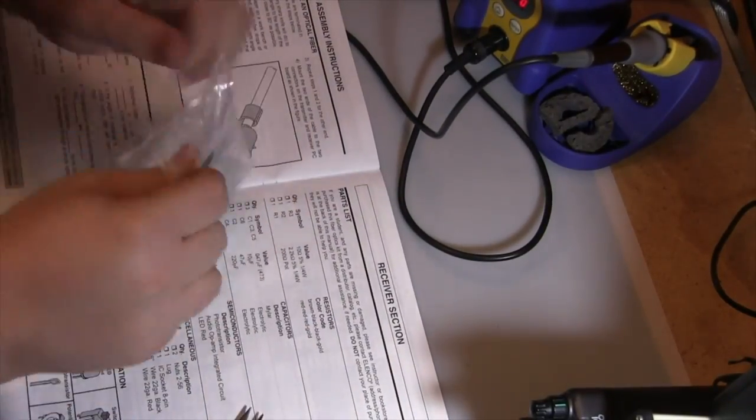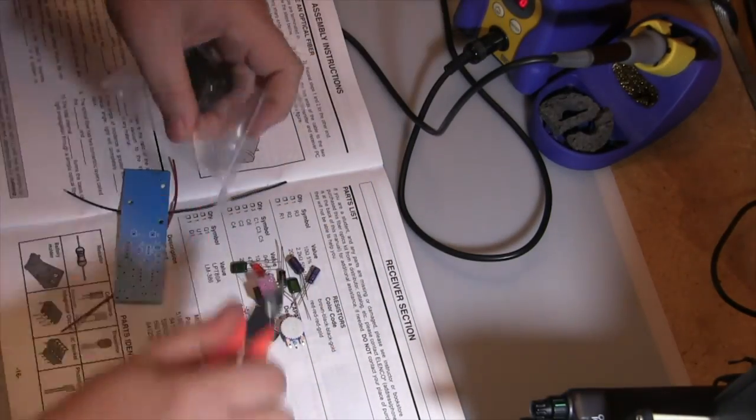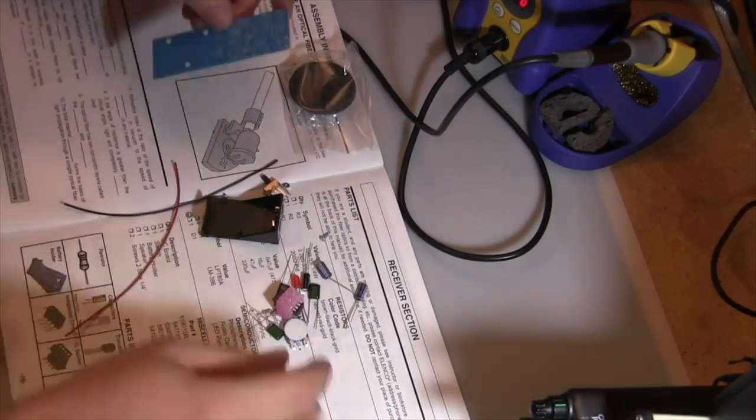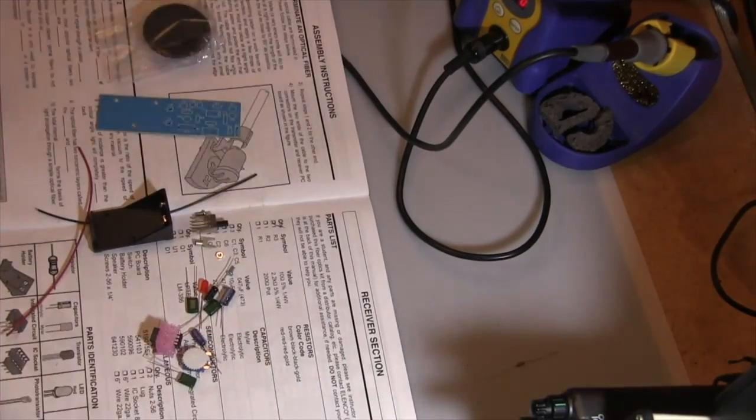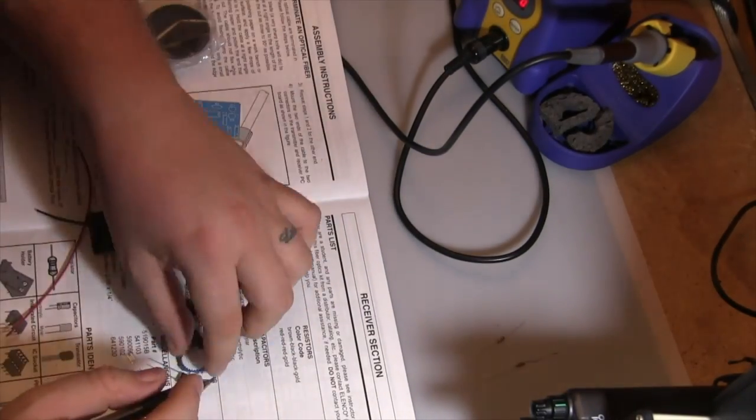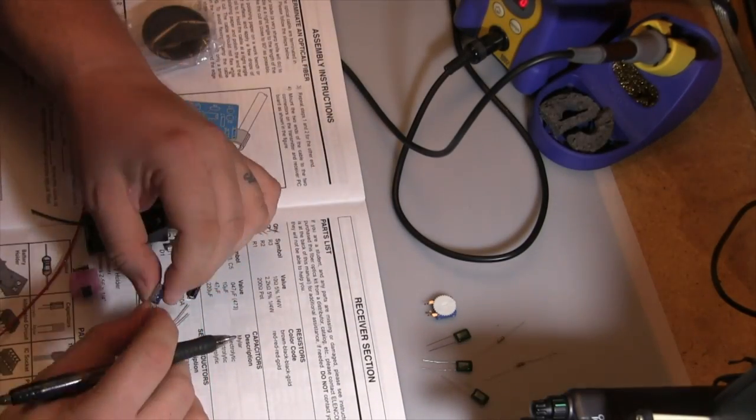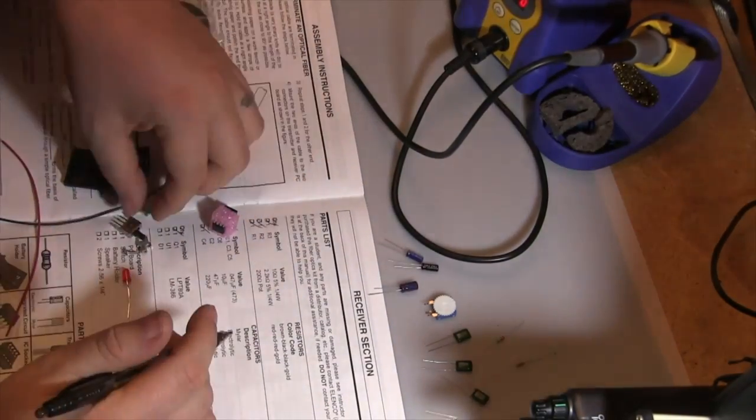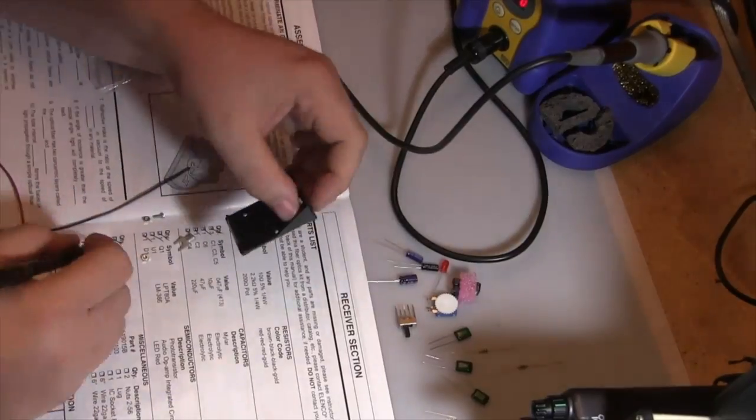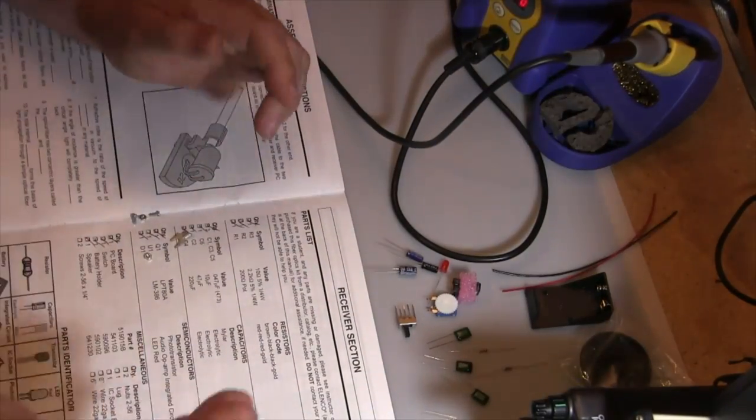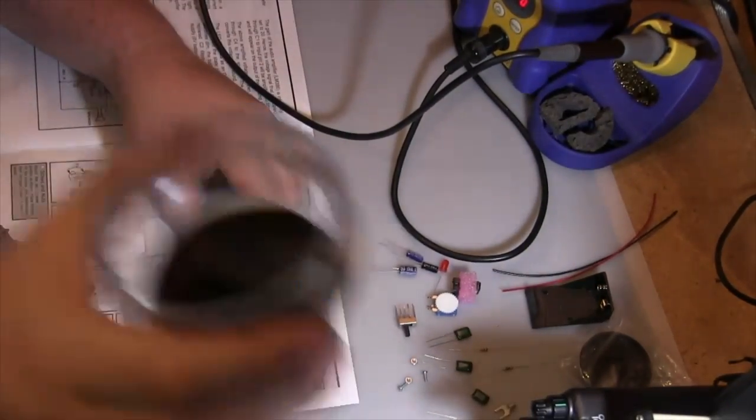Now it's time to build the receiver. Again, we're going to inventory all the items in the kit before we continue. If you don't have all the items, there's no sense to continue with the build. There are considerably fewer parts with the receiver than with the transmitter.